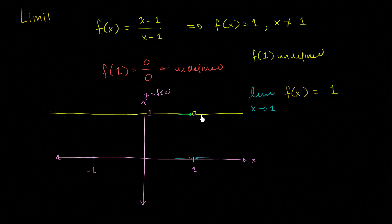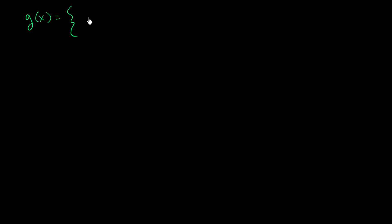So once again, it has very fancy notation, but it's saying: what is the function approaching as x gets closer and closer to 1? Let me do another example where we're dealing with a curve. Let's call it g of x. Let's say that g of x equals x squared when x does not equal 2, and when x equals 2 it is equal to 1. It's an interesting function that is not fully continuous — it has a discontinuity.